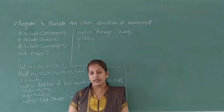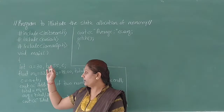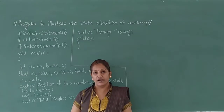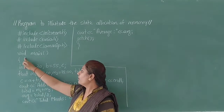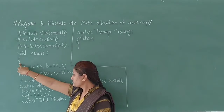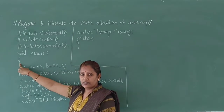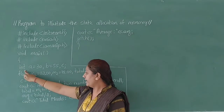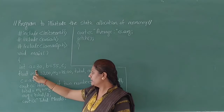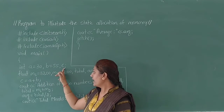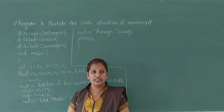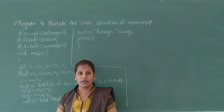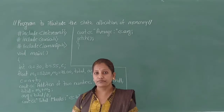In this program, no classes are created. Directly the main function is defined, and always the program execution starts from the main function. The program execution starts by reading the opening flower bracket. Next, int A = 30, B = 55, and C. Here three variables are declared with the data type integer.